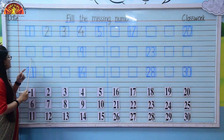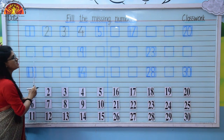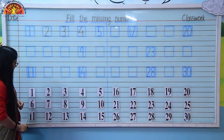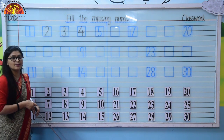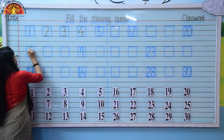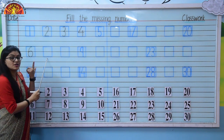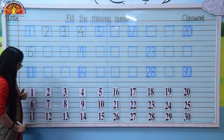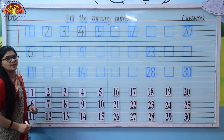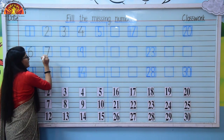Come to the next line. This block is empty — the number is missing. So which number comes after 5? After 5 it's 6. So here we will write number 6. Again, one number is missing. So which number comes after 6? After 6 it's 7. So in this box we will write number 7. Write number 7.